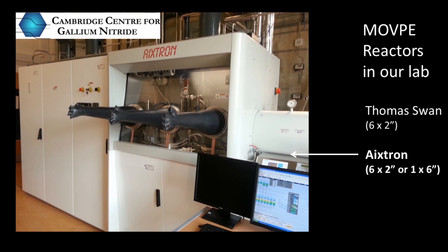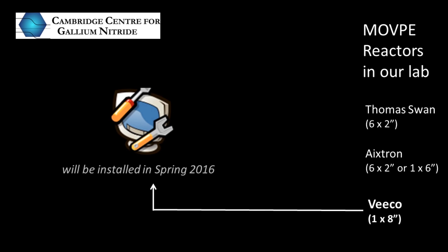We also have a more modern, more production style system, in which we can similarly grow both six two inch wafers or one larger wafer six inches across. And finally, we are having installed a much larger system, which will allow us to grow on eight inch wafers. And that's going to allow us to scale up our research to a much more industrial level.